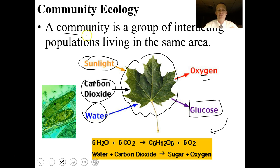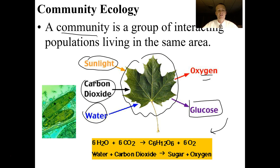Communities are really, really complicated. We don't know much about communities or how they function. It is an emergent property when you get lots of populations living in the same area — these communities develop, and they're very sophisticated entities.